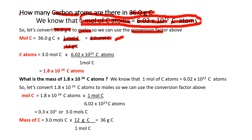The number of carbon atoms is equal to 3 moles of carbon times 6.02 times 10 to the 23rd carbon atoms, divided by 1 mole of carbon. The answer is 1.8 times 10 to the 24th carbon atoms.